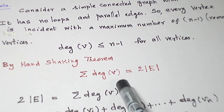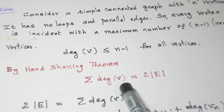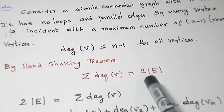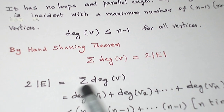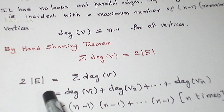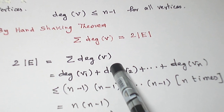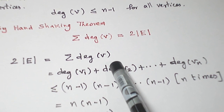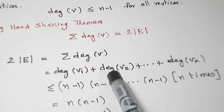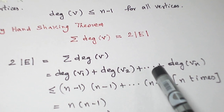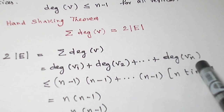Now, let us use the handshaking theorem. The sum of degrees of all vertices equals 2 times the number of edges. So, 2 times the number of edges is equal to the sum of degrees of all vertices — I write it as degree of v1 plus degree of v2 plus etc. up to degree of vn.